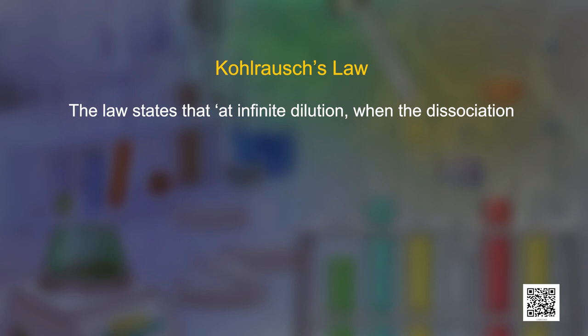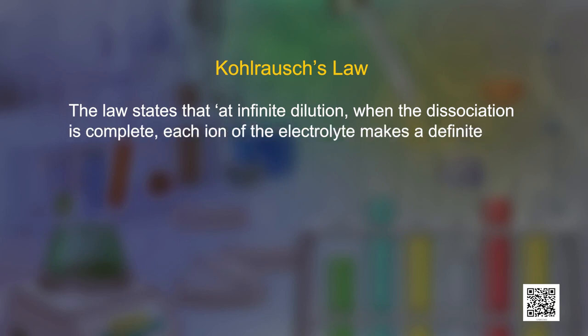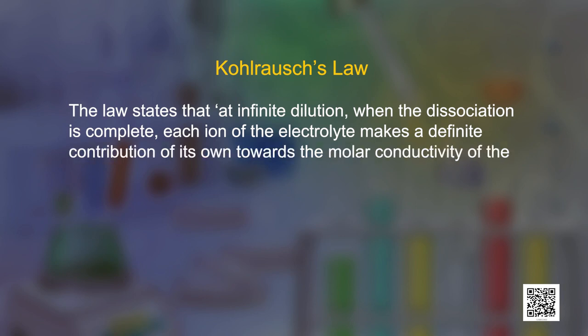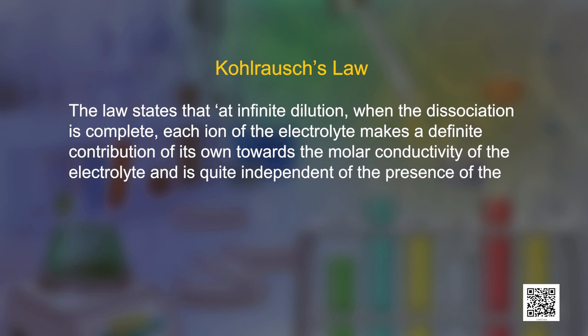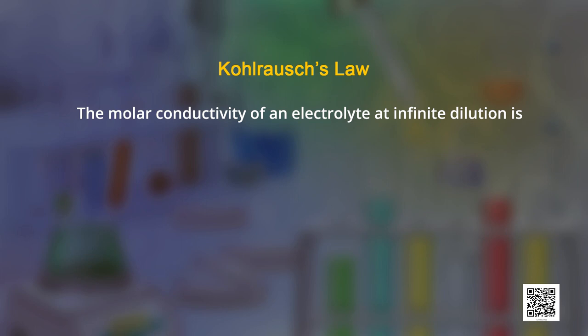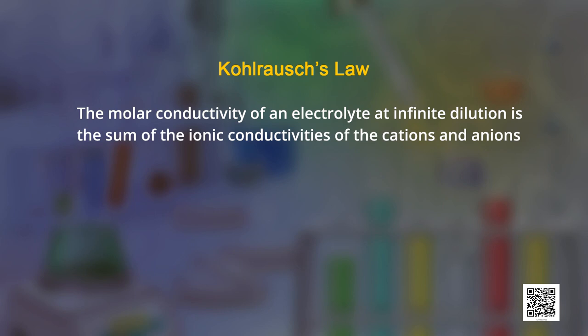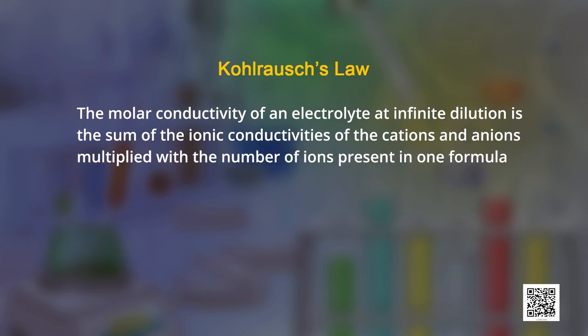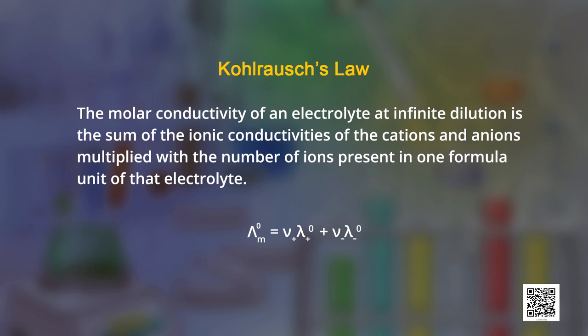For this reason, we need to understand the Kohlrausch law of independent migration. Kohlrausch law states that at infinite dilution, when the dissociation is complete, each ion of the electrolyte makes a definite contribution of its own towards the molar conductivity of the electrolyte, and is quite independent of the presence of the other ion. Thus, the molar conductivity of an electrolyte at infinite dilution is the sum of the ionic conductivities of the cations and anions multiplied by the number of ions present in one formula unit: λm⁰ = ν⁺λm⁰⁺ + ν⁻λm⁰⁻.